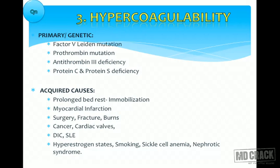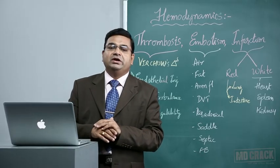Prolonged surgeries, fractures of long bones, high percentage burns, and patients with procoagulant activity — commonly seen with cancer patients, especially mucin-secreting adenocarcinomas — a lot of procoagulants will be secreted causing hypercoagulability. Patients who have undergone cardiac valve implantation, DIC, SLE, hyperestrogenic states, certain ovarian tumors like granulosa cell tumor, smoking, sickle cell anemia, and nephrotic syndrome are all acquired causes of hypercoagulability.